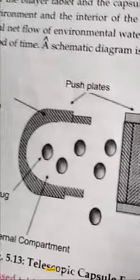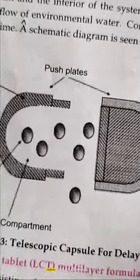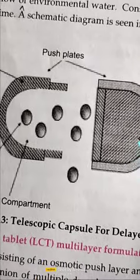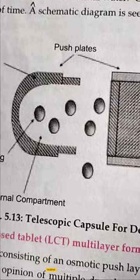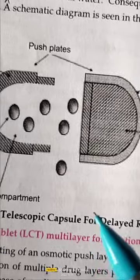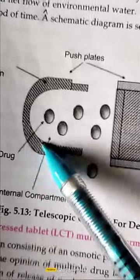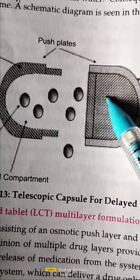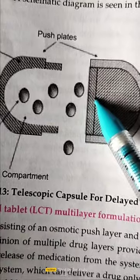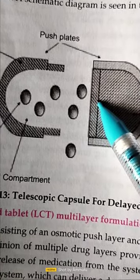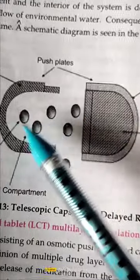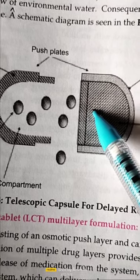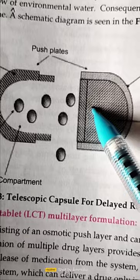The next type is the telescope capsule delayed release system. This is a bilayered osmotic tablet where one chamber contains the drug and another chamber contains the osmotic engine. The filling of the drug is performed either manually or by automated filling machines. These two layers are separated by a waxy material, and the tablet is fitted inside a capsule with the osmotic layer positioned accordingly.